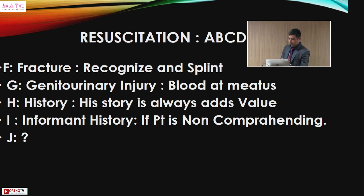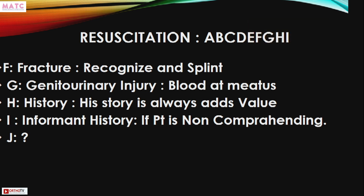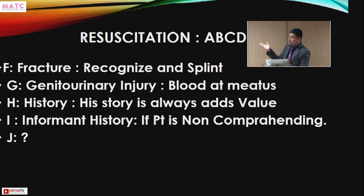After recognizing the fracture, we splint it and plan fixation. Genitourinary injuries must not be missed — cancellous bones that are fractured and displaced bleed continuously unless stabilized or approximated. Blood at the genitals or urethral meatus specifically should be assessed. If the patient is conscious, history adds value; if not, informant history is taken.